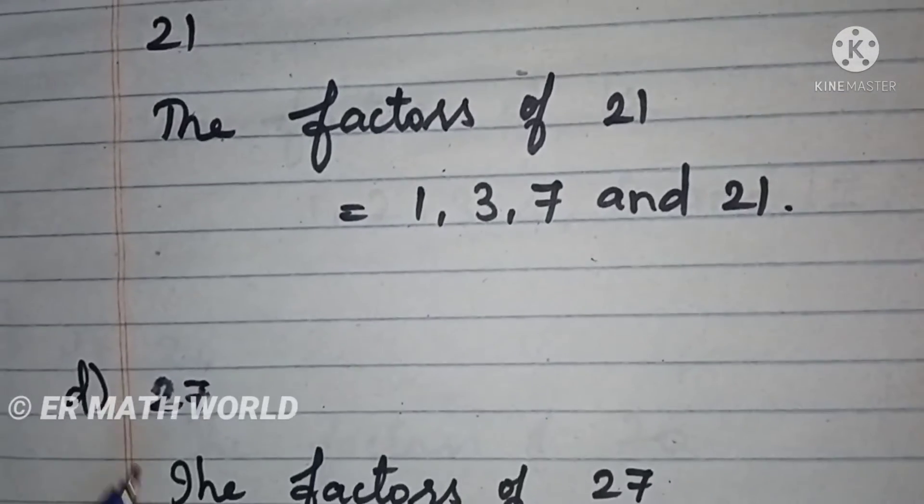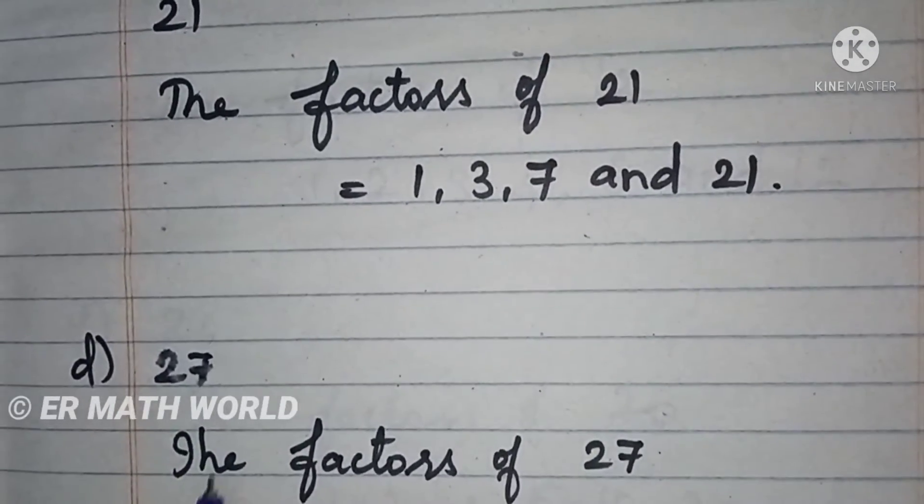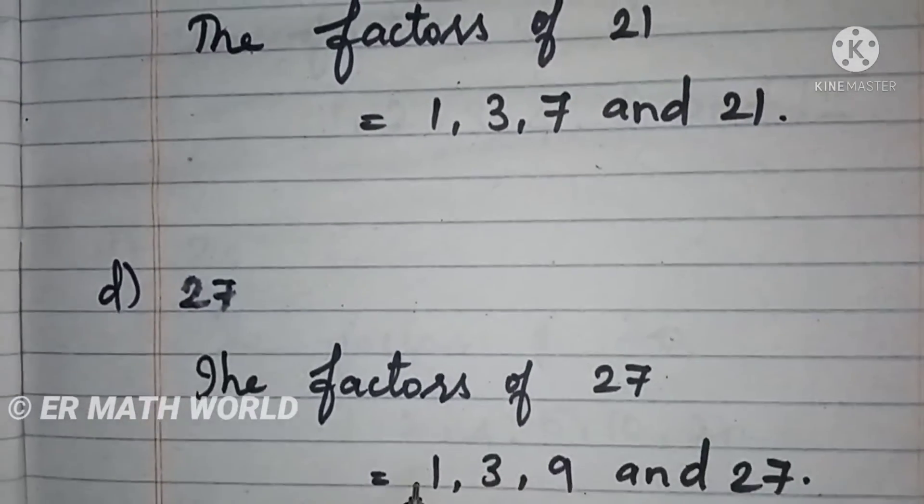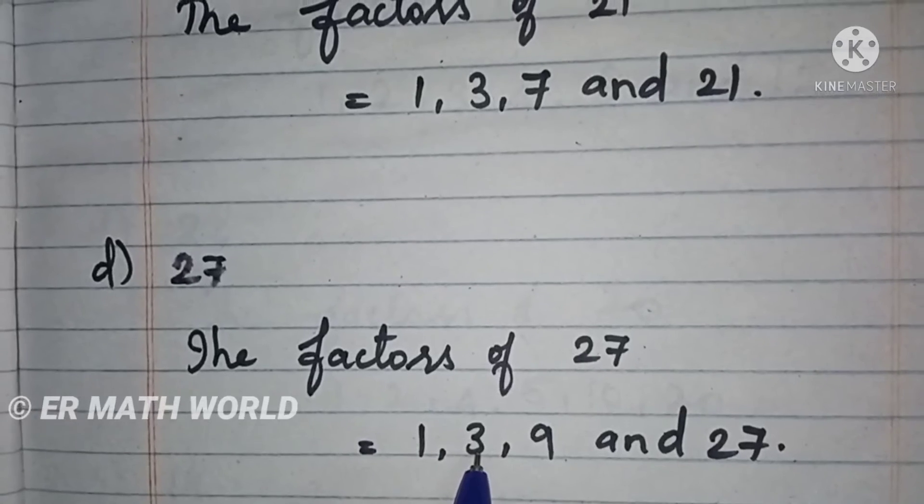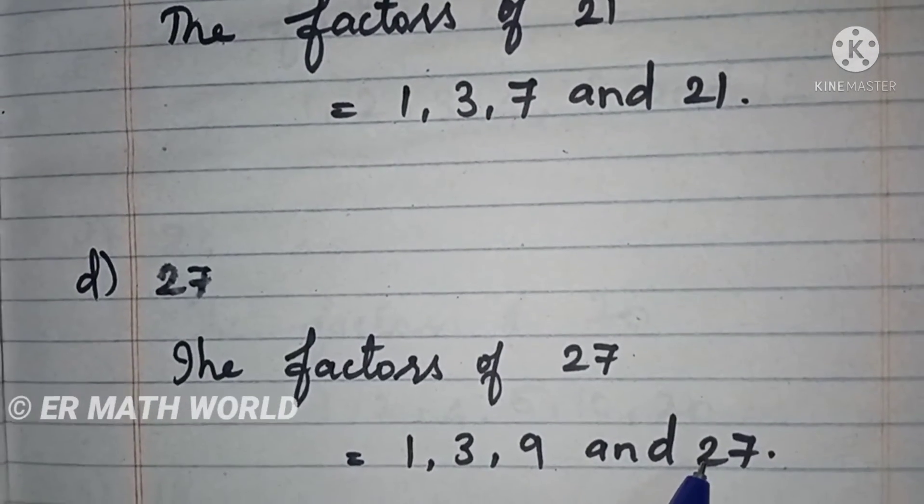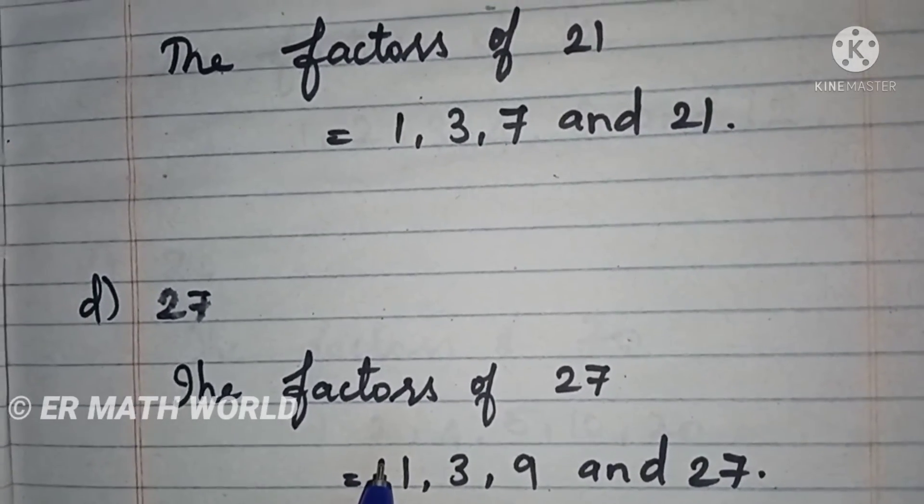D Subdivision, 27. The same way, the factors of 27 are 1, 3, 9, and 27. This is how you have to find the factors of that given number.